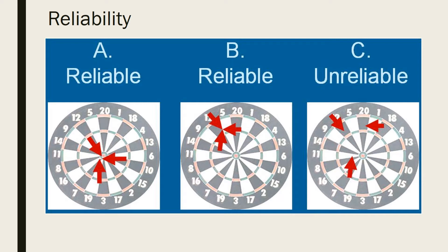Reliability can be visualised using the game of darts. The first dartboard, A, is reliable because all of the darts are together. The thrower is consistent and therefore reliable.